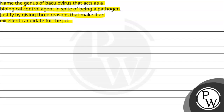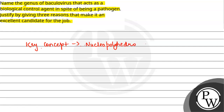In the question, baculovirus is the genus that acts as a biological control agent in spite of being a pathogen. The key concept here is Nuclear Polyhedrovirus. Nuclear Polyhedrovirus — what is it? We commonly also call it NPV.